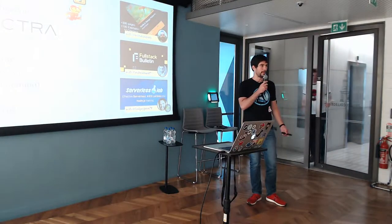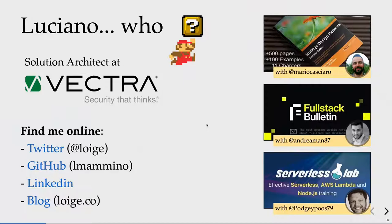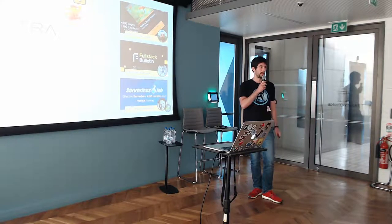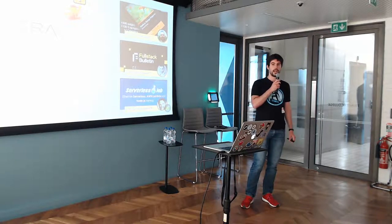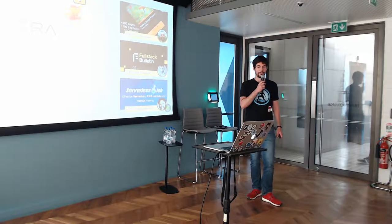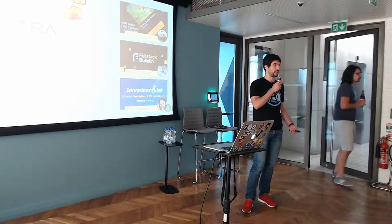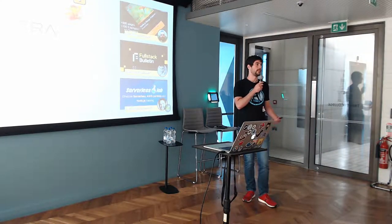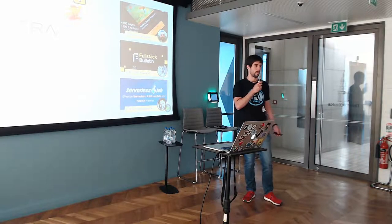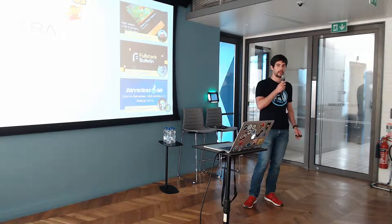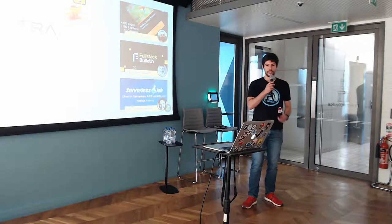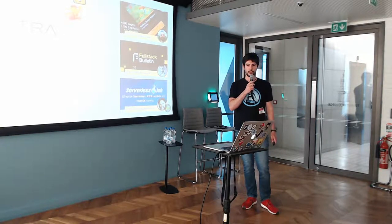Hello everybody, I am Luciano. As you might have guessed, I like Super Mario, and probably by my funny Italian accent you also guessed that I am Italian. But I live and work in Dublin for a company called Vectra. Vectra is a very interesting company — they do security and machine learning, or artificial intelligence if you are talking to investors. We are building products for automatic threat detection on a network and research when there is a threat inside network traffic.